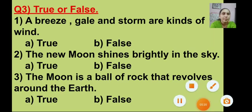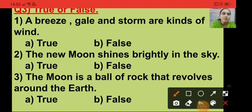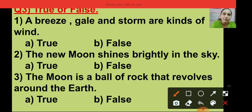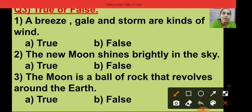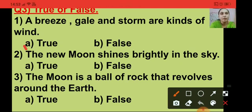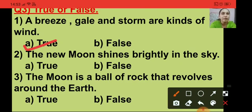True or false? Here there are two options for each question. If the statement is true, you are going to put a tick on the true option. If the statement is false or wrong, you are going to click on the false option. Question number 1: a breeze, gale and storm are kinds of wind. This statement is true, so I am putting a tick on option A, that is the true option. A breeze, gale and storm are kinds of wind.